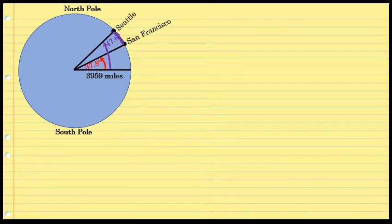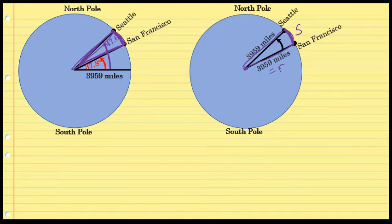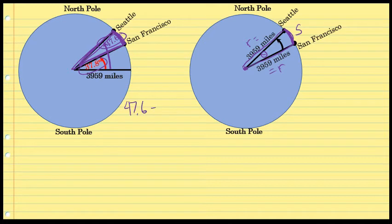The distance between the two cities is what I'm outlining in purple. The important part of the diagram is the sector of the circle where the arc length joins Seattle and San Francisco. In a sector of a circle, the curved distance is known as the arc length. There are two radii, each 3,959 miles. The central angle is the difference between 47.6 and 37.8, which is 9.8 degrees.